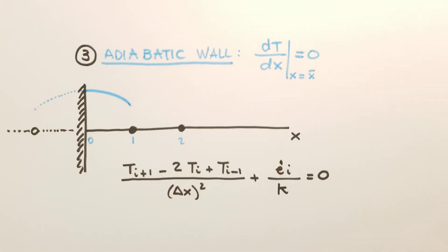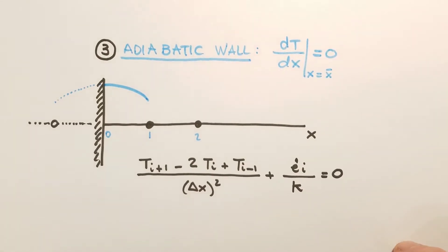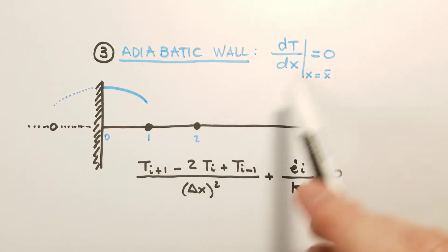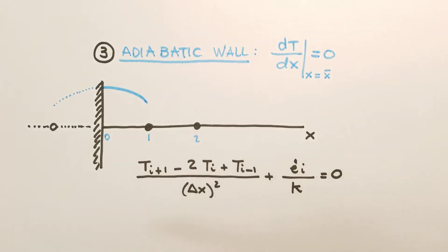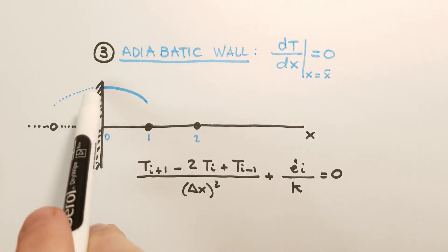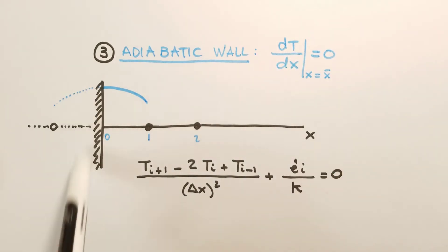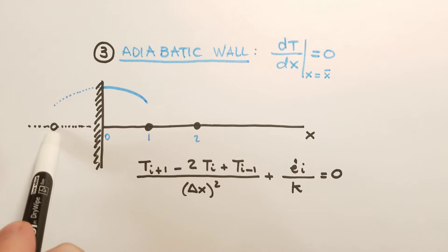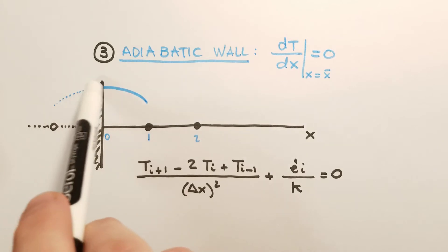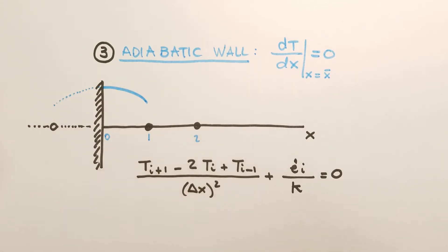A special case is when the heat flux specified at the boundary is actually zero — so we have an adiabatic wall, meaning dT/dx equals zero. In this case we can use the analogy with the symmetry condition, because here also we have a zero derivative of the temperature with respect to x. This means we can imagine a fictitious grid point on the other side, and the temperature at that point would be exactly symmetrical with respect to the adiabatic wall.